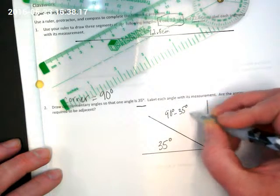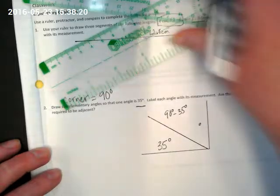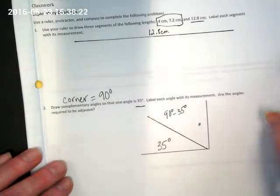I missed the corner by a little bit, but we're pretty close. That's 35 degrees. How would I find this other angle? Well, it's going to be 90.